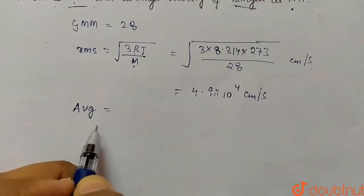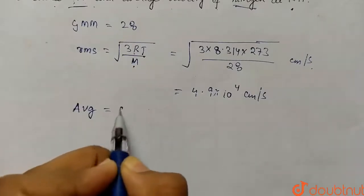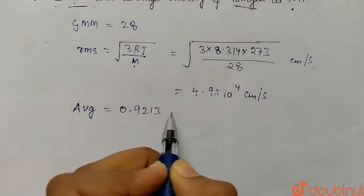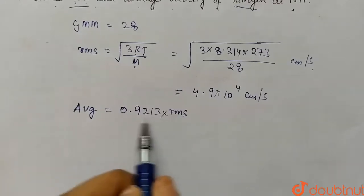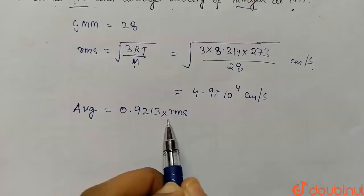Now let's calculate the average velocity. We know that average velocity equals 0.9213 times RMS velocity.